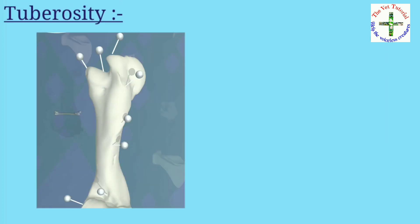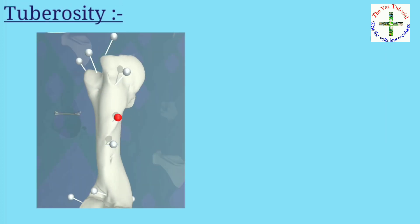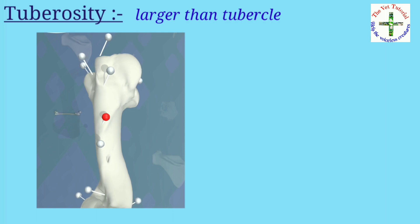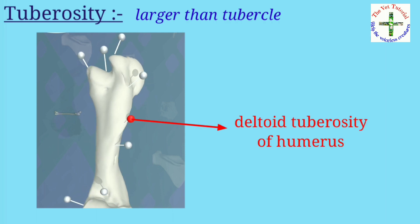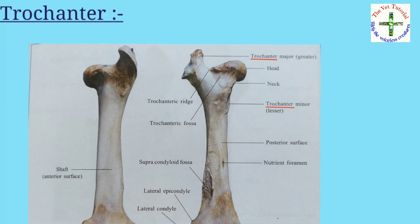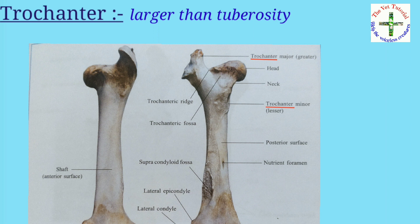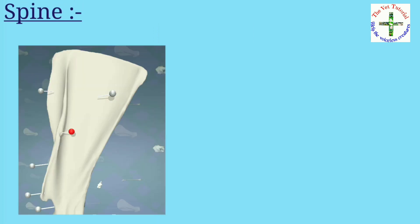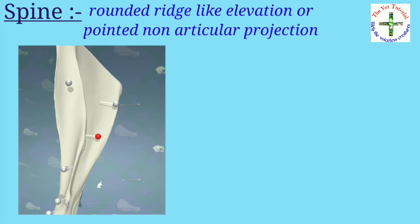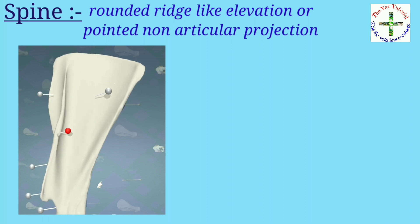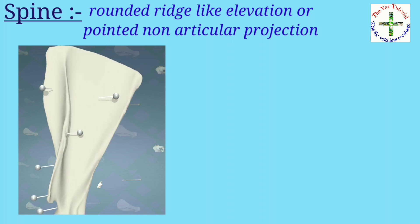Then tuberosity — it has the same feature as tubercle but is larger than tubercle. Example: found in humerus, radius, metacarpal, and tibia. Then trochanter — it has the same feature as tuberosity but is larger than tuberosity. Example: found in femur.